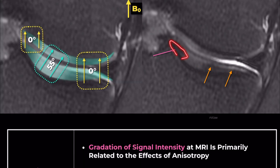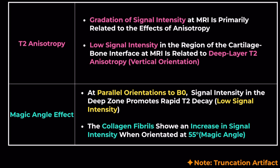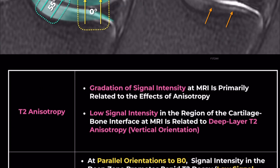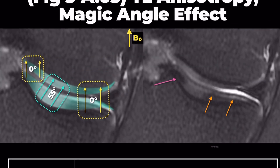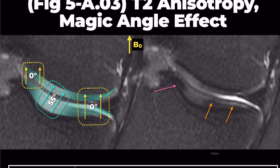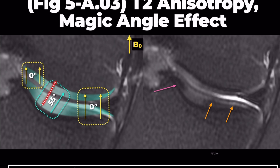Moving on to our second artifact, the magic angle effect. When collagen fibrils are oriented at approximately 55 degrees to the main magnetic field — what we call B0 — the signal intensity increases.